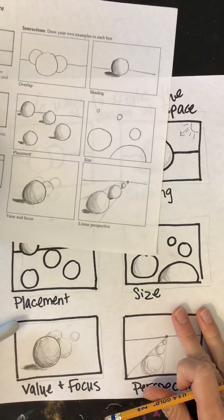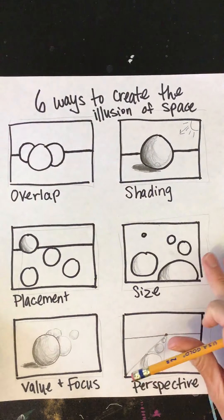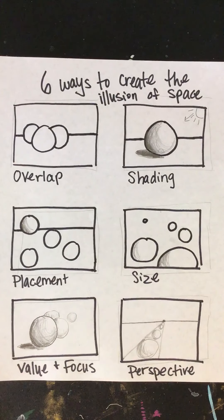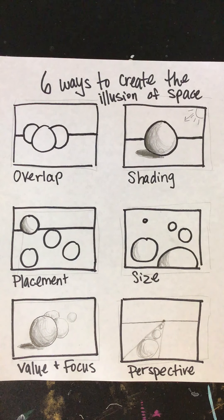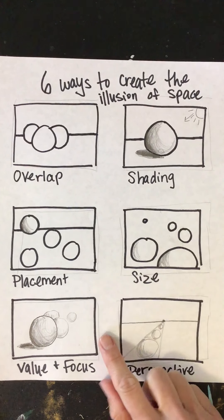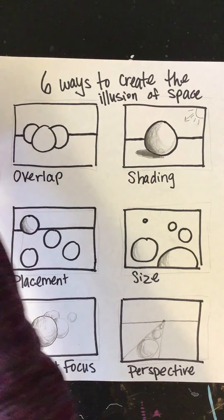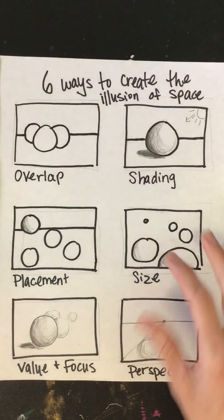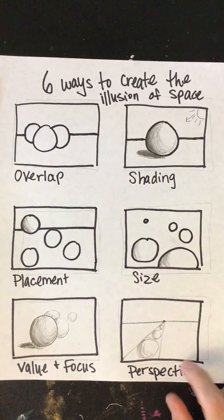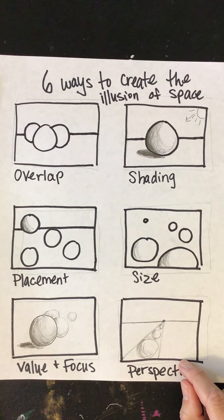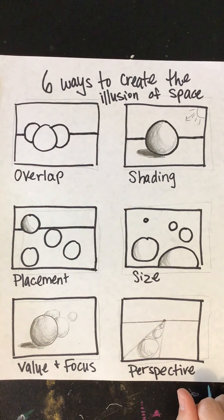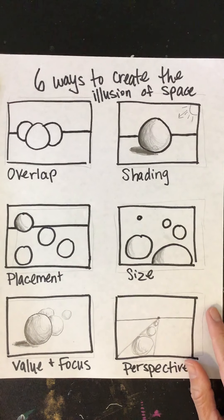All right, so these are our six ways to create the illusion of space. Go ahead and if you haven't been following along, pause the video now. I'd like you to create your own version of this. Or again, fill in this worksheet. And go after that, take a picture of it. And you're going to upload it to the assignment that you found this attachment in the video. All right, great job. Take care.